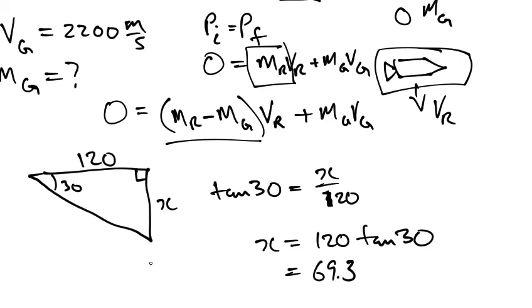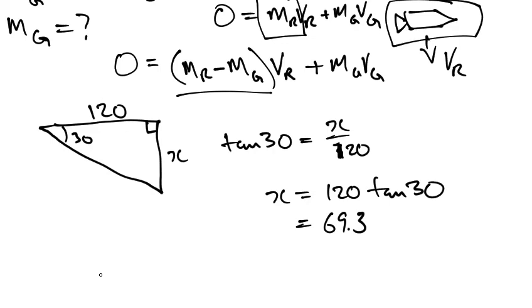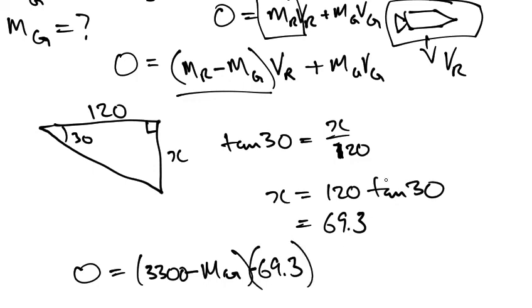So we have 0 equals mass of the rocket, 3,300, minus mass of the gas, times VR, which is 69.3. By the way, this is actually negative 69.3 because that's going down.